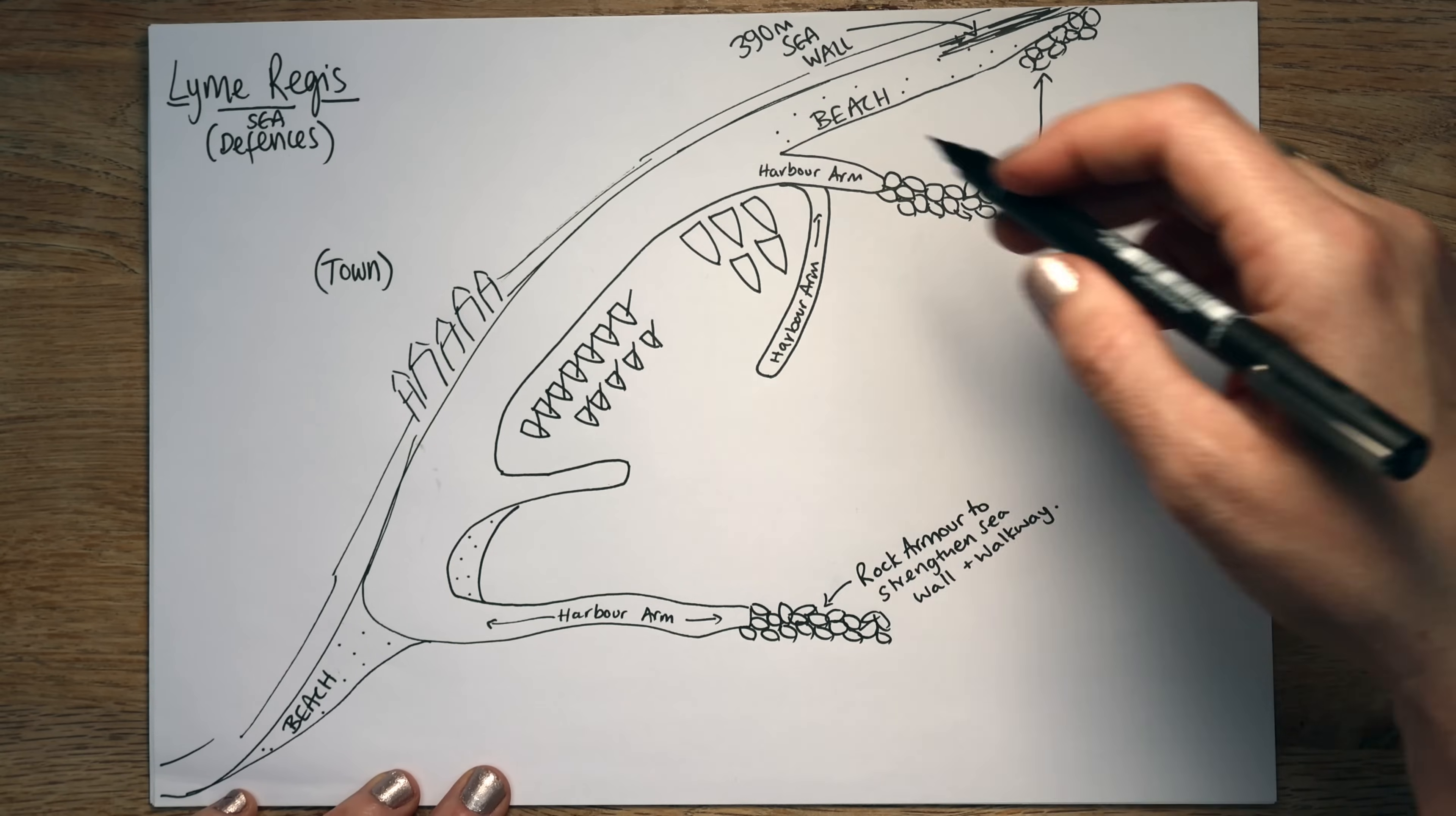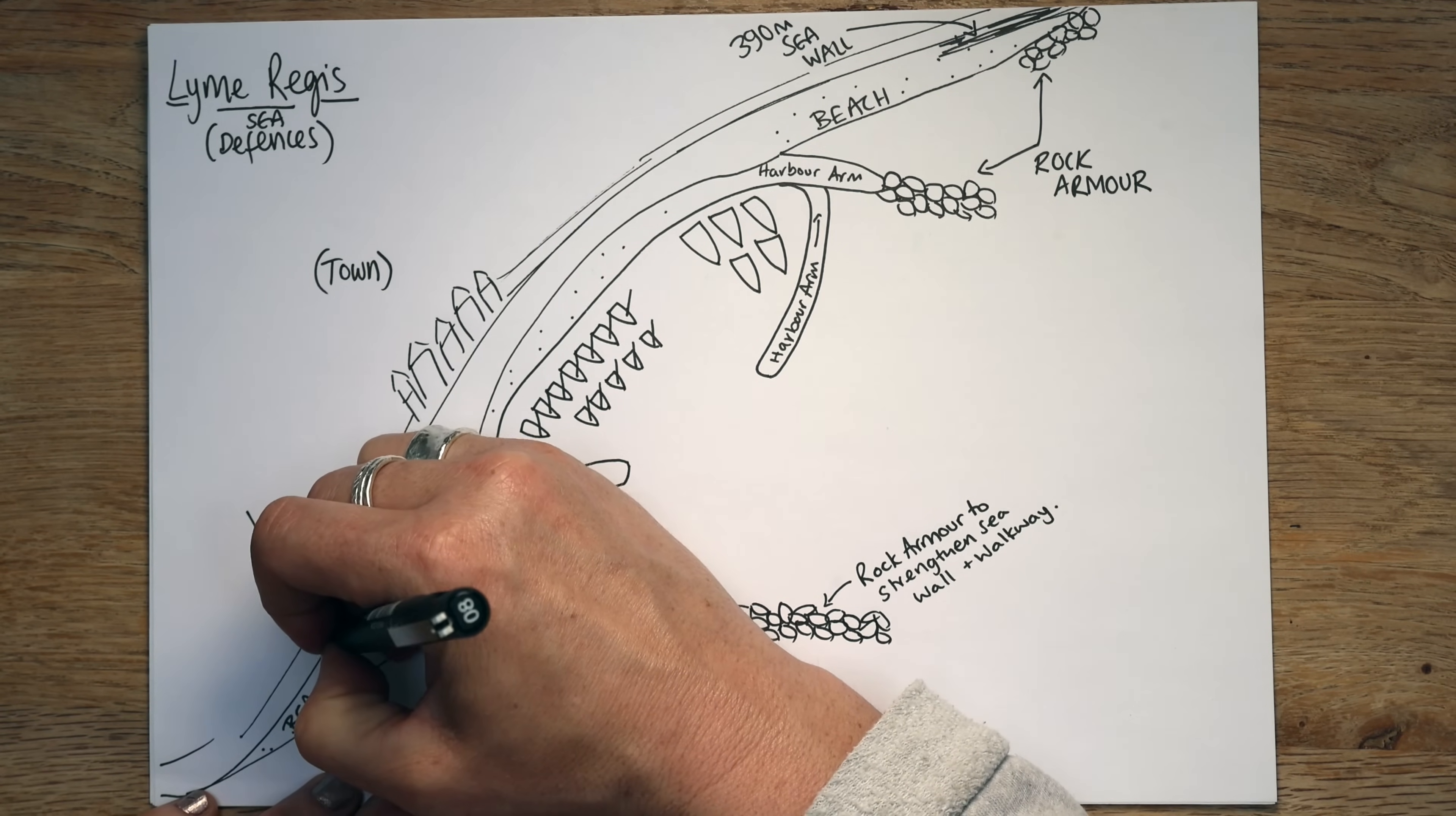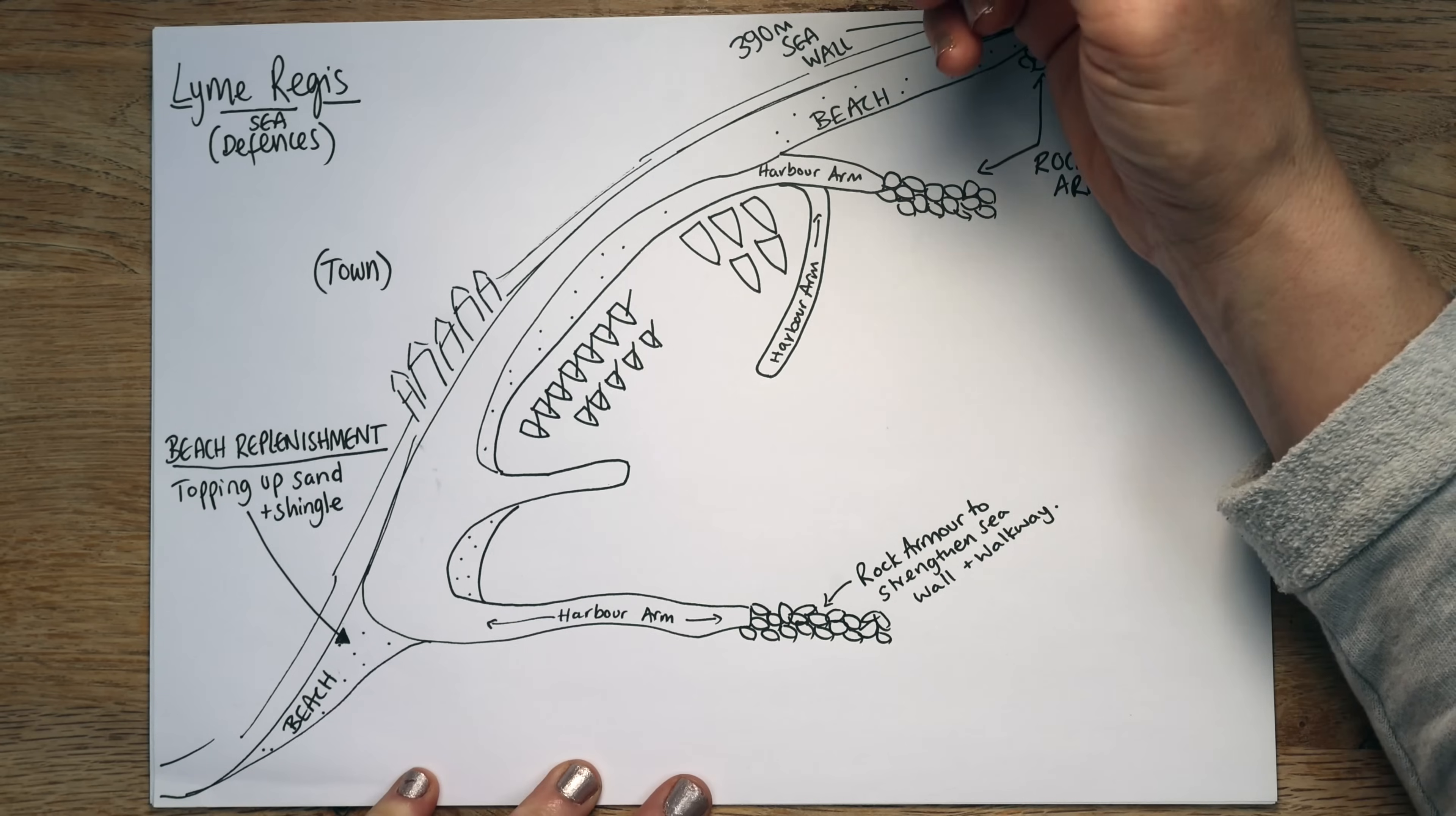So as well as all the rock armour, we mustn't forget that the beach itself. Right, the beaches all along from Lyme Regis, all of these beaches, they're not artificial as such, because they would be there anyway, but they're bigger and they're healthier because of something called beach replenishment. So I'm just going to draw an arrow to this one section of beach, but I want you to remember that it's for all the beaches.